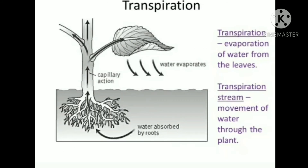Looking at this picture of transpiration: it shows evaporation of water from the leaves. This is called the transpiration stream — the movement of water through the plant. Water is absorbed by the roots from below, moves through the stem to the leaves, and then evaporates from the leaves. This process is called transpiration, and it happens in all types of plants.